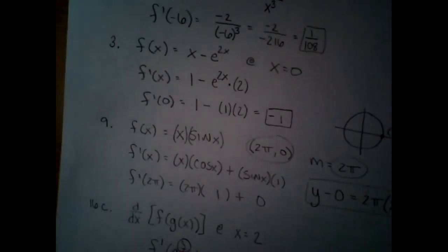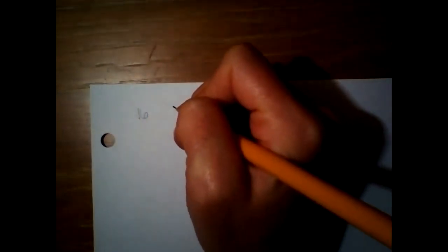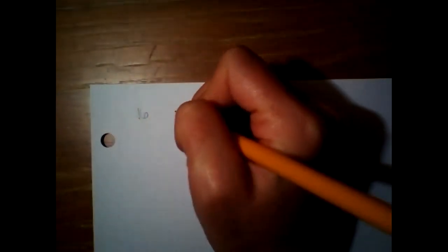Someone asked about 16D and 16E, so let's do both of those. For 16D, it says find the inverse derivative at negative four. So we're going to make a chart for f and f prime, and then for the inverse and the inverse derivative.